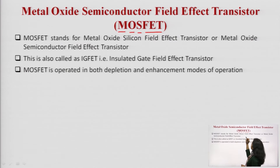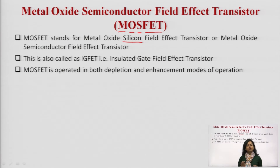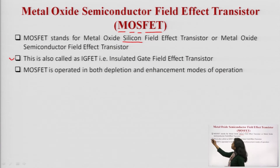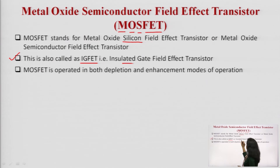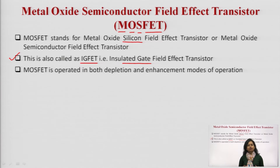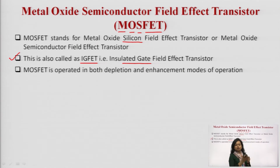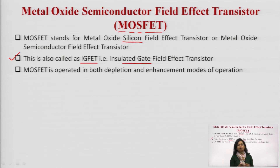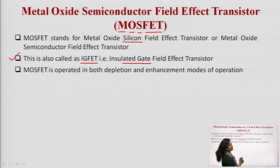MOSFET is also known as metal oxide silicon field effect transistor because silicon is the commonly used semiconductor material. That is why it is also known as IGFET — Insulated Gate Field Effect Transistor. In the case of the MOSFET, the gate terminal is isolated from the substrate or body. There is no direct connection; there is an insulation in between. That is why it is known as an insulated gate.